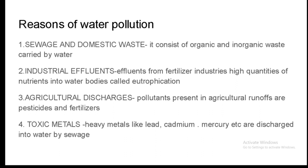Let us discuss the reasons for water pollution one by one. First is sewage and domestic waste. Domestic waste consists of discarded materials produced from individual human activities, including organic and inorganic waste coming out of houses, hotels, religious institutions, etc. Sewage consists of organic and inorganic waste matter of the community carried by water. Domestic sewage contains a large quantity of soaps, detergents, and human and animal excreta.